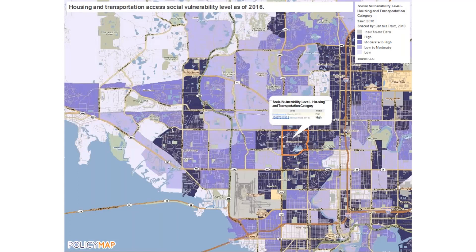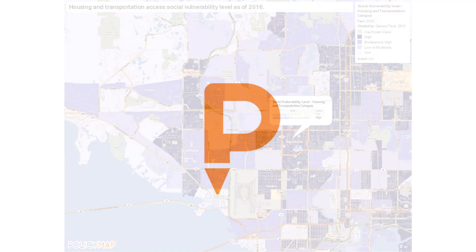The next area of social vulnerability is housing and transportation access. It includes housing units in larger multifamily buildings with 10 or more units, mobile homes, crowding, households without access to a car, and populations living in group quarters such as prisons or dormitories. Crowding is defined as housing units with more residents than rooms. This measure can flag areas where housing stock may be at risk during a disaster or where populations may not be able to heed an evacuation order.